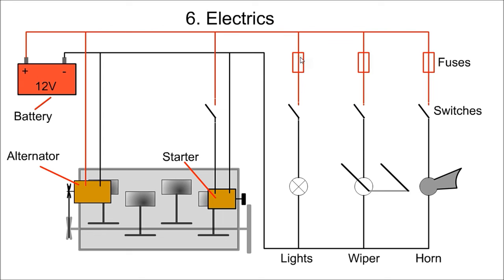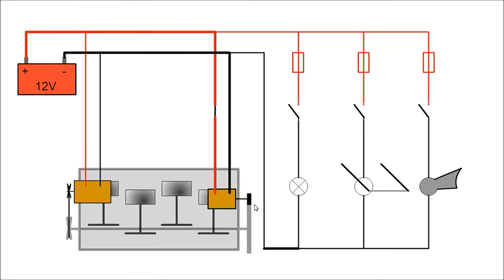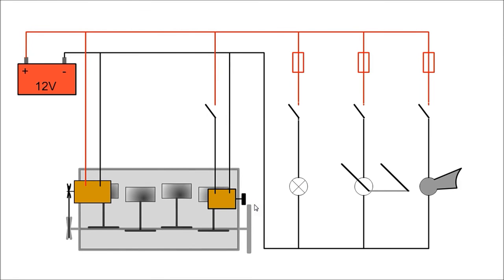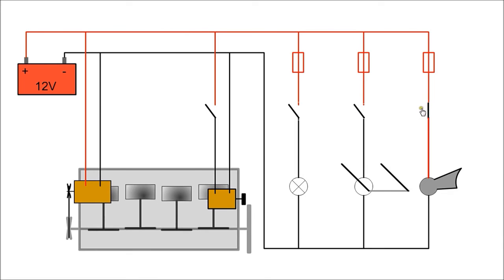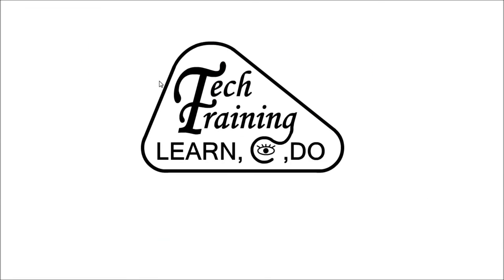Fuses provide protection for each individual circuit and switches allow current to flow. When we start the engine, a pinion on the starter moves forward and engages with the ring gear on the flywheel. Now the alternator supplies power to the battery and electrical circuits and switches allow current to flow. We hope you learned from Automotive Appreciation. Thank you very much.